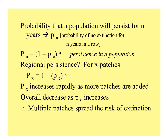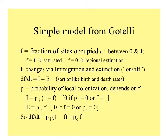The bottom line is: multiple patches spread the risk of extinction. Using a model from Gatelli's book, the fraction of sites occupied can be symbolized with f, a number that varies between 0 and 1. If f is 1, every site has the population present; if it's 0, none do — we have a regional extinction. The fraction of sites occupied, f, changes because of immigration and extinction, patches blinking on and off.